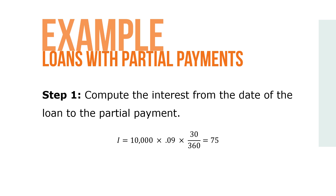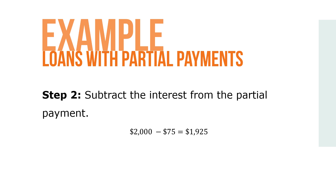Step 1: Compute the interest from the date of the loan to the partial payment. In this problem, the first partial payment was made on day 30, so I equals $10,000 times 0.09 times 30 over 360, which equals $75. Step 2: Subtract the interest from the partial payment. $2,000 minus $75 equals $1,925.